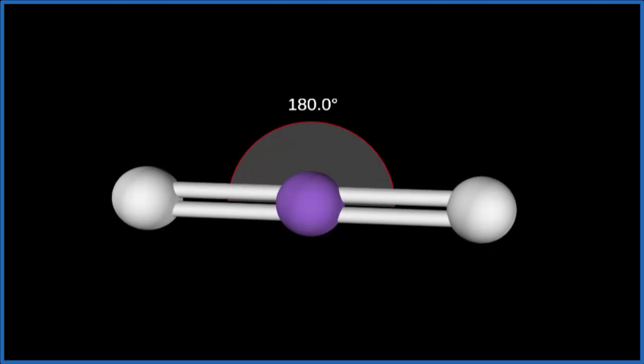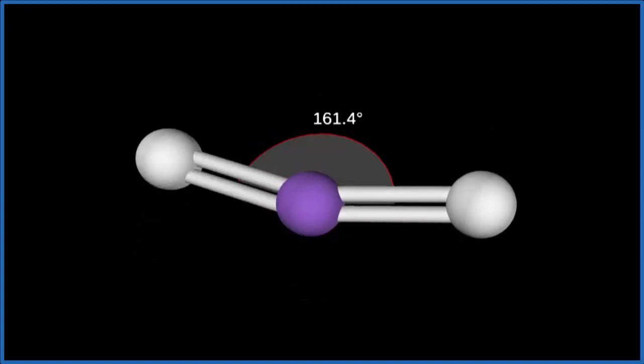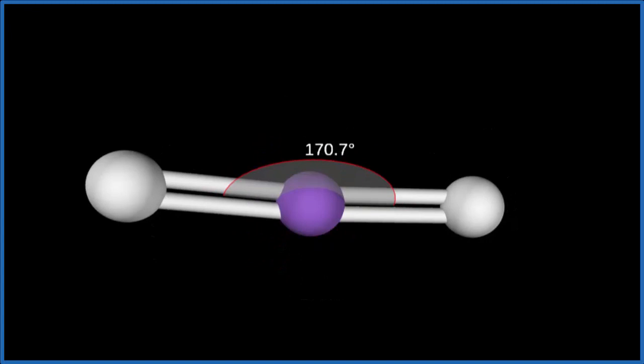So the molecular geometry for CO2, that's going to be linear. And since there's no electrons on that central carbon atom, the electron geometry would also be linear.